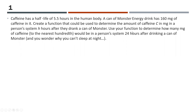First question: caffeine has a half-life of 5.5 hours in the human body. A can of Monster Energy drink has 160 milligrams of caffeine in it. Create a function to determine the amount of caffeine C in milligrams in a person's system H hours after they drink a can, then use your function to determine how many milligrams — to the nearest hundredth — would be in a person's system 24 hours later. Pause the video and give it a try.